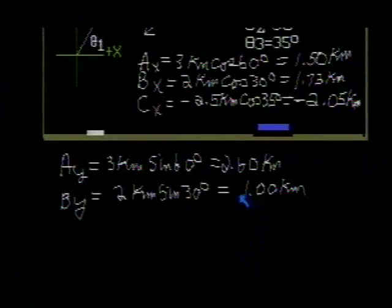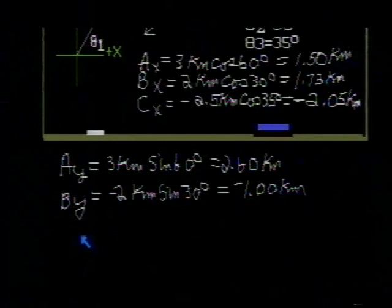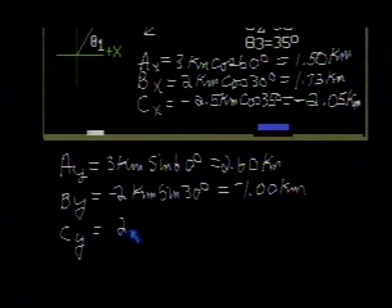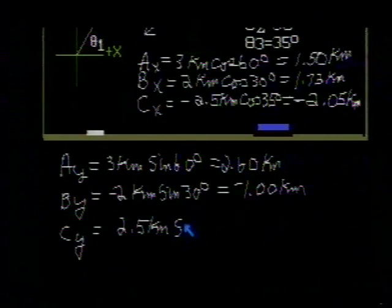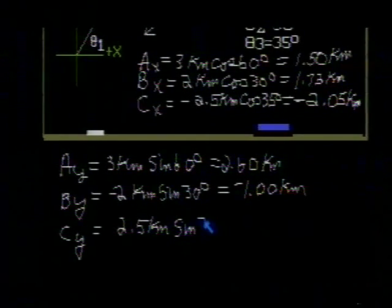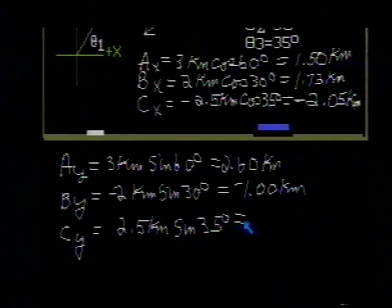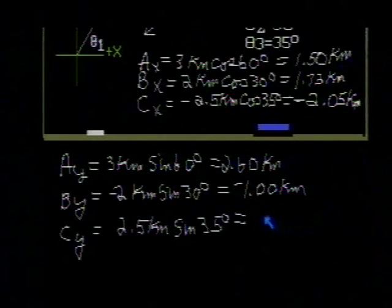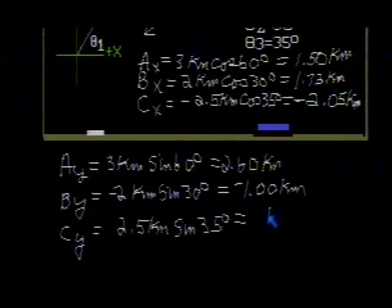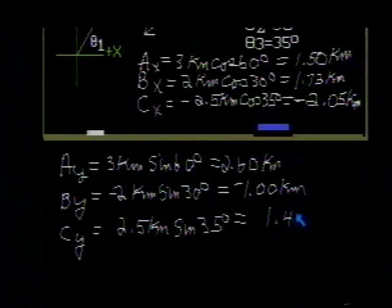Our y component of C, 2.5 kilometers, times the sine of 35 degrees, gives me a value of 1.43. And it too is negative. It's in the downwards or negative y direction.